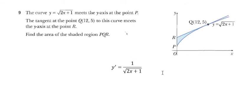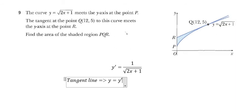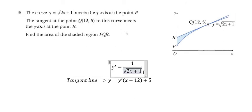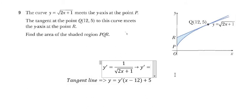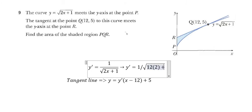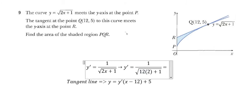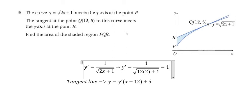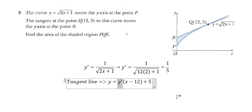Now we have the formula of the tangent: y equals the first derivative of the function times (x minus the x-coordinate of the point), plus the y-coordinate, which is 12 and 5. For the first derivative, we substitute x equals 12, and we get the answer, which is 1 over 5.